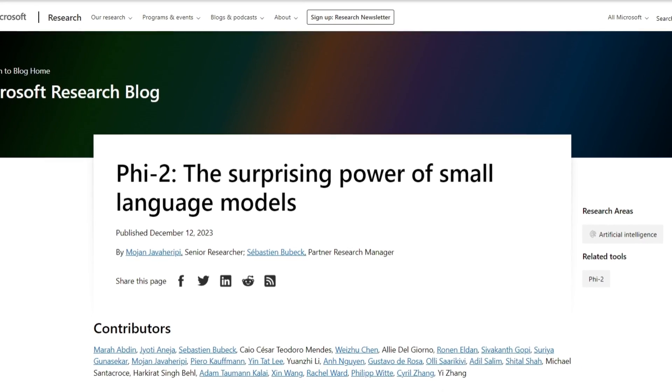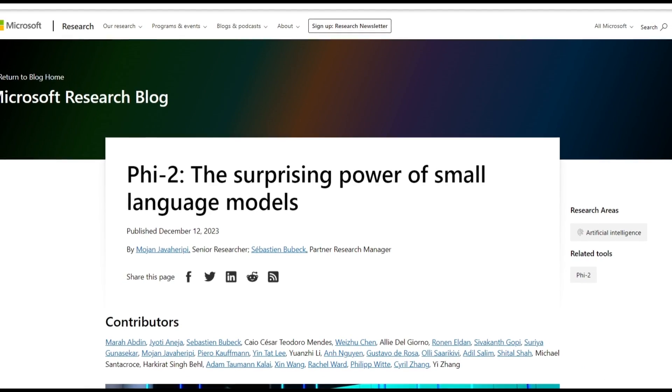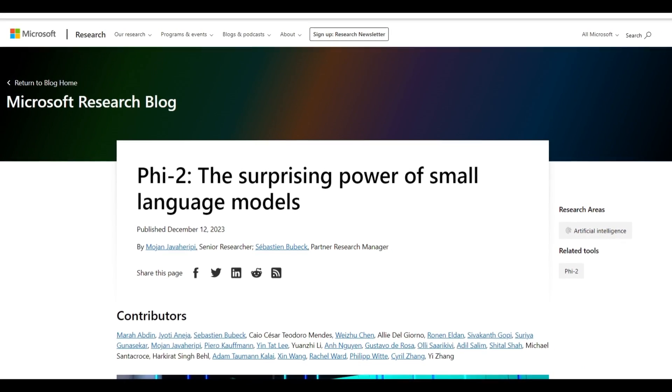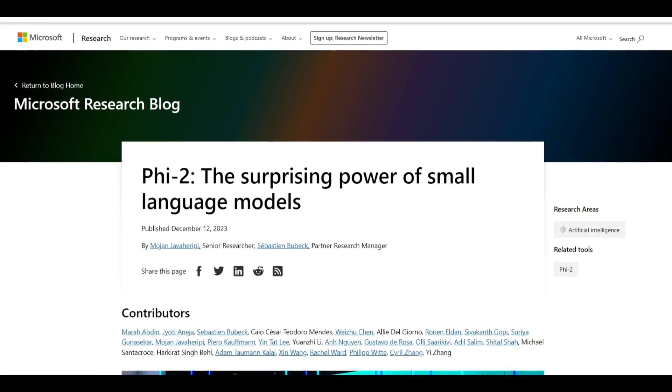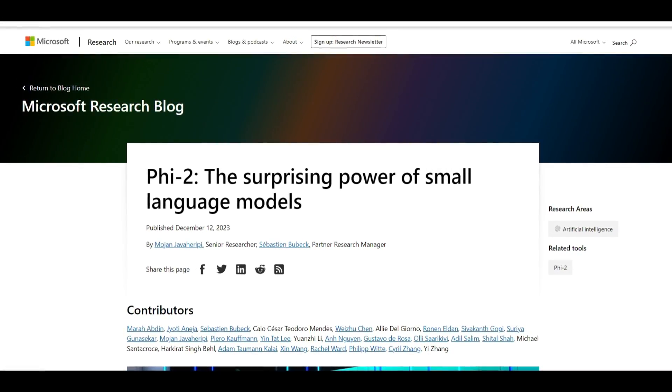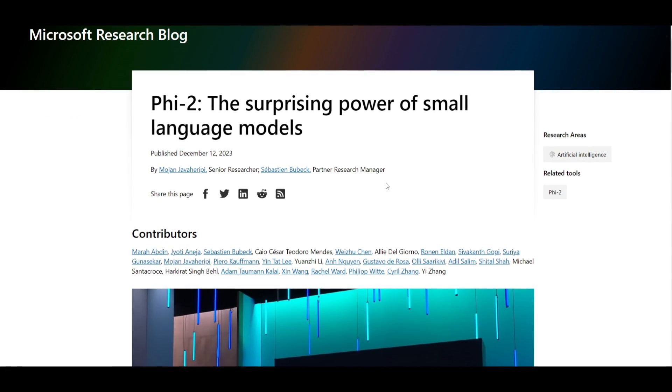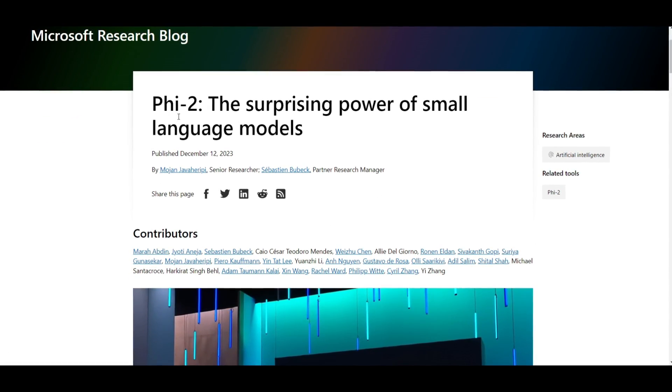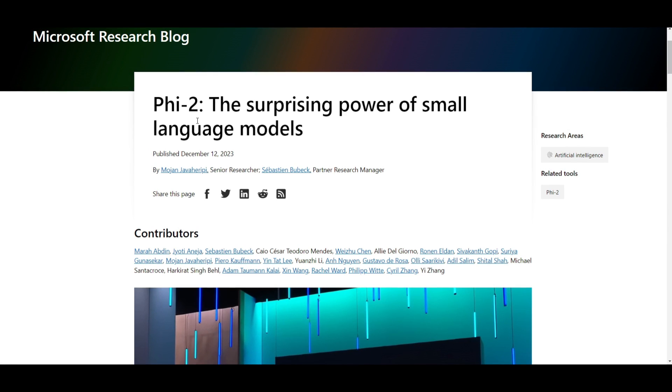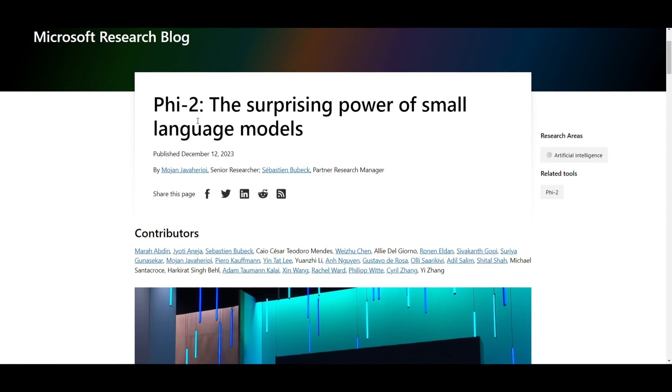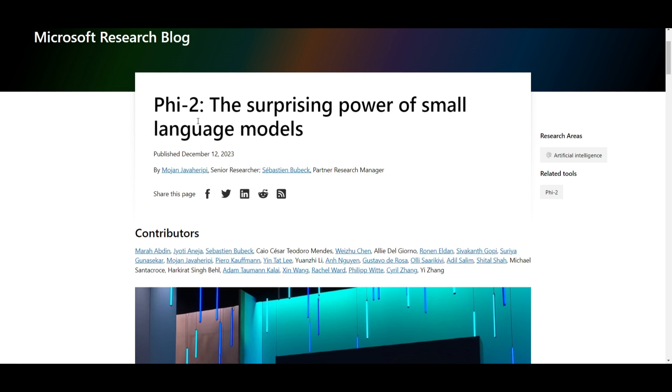In today's video, we're going to take a look at Phi-2, Microsoft's new smallest language model. The team behind this is the Machine Learning Foundation, and they recently introduced a series of small language models. They started with the Phi-1 model and gradually evolved it to the Phi-1.5 model, a 1.3 billion parameter model that was quite impressive in its performance in common sense and language understanding, comparable to models five times its size.